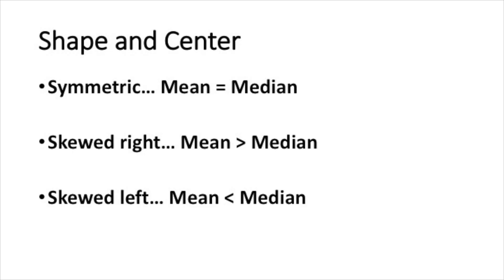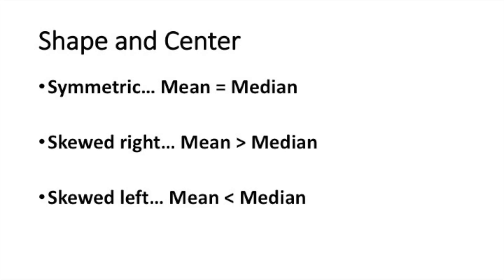There's a cool relationship between the shape of a histogram and the statistics we use to measure the center. If the histogram is symmetric, the mean equals the median. If a histogram is skewed to the right, the mean is larger than the median — it's pulled up by those very large values out in the right tail. If a histogram is skewed to the left, the mean is less than the median because the very low values in the left tail pull down the mean.